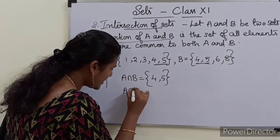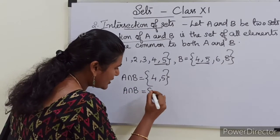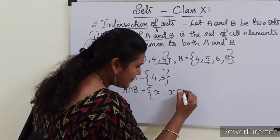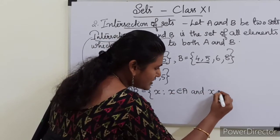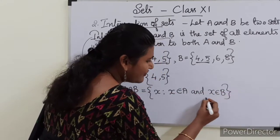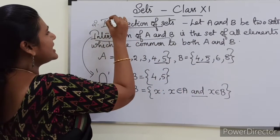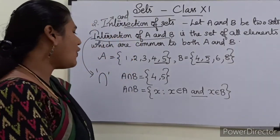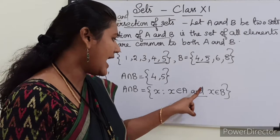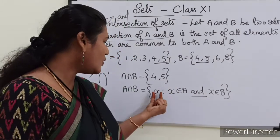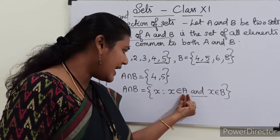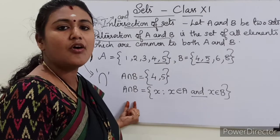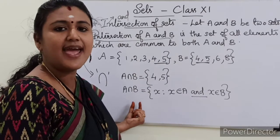So A intersection B is equal to the set of all X such that X belongs to A and X belongs to B. So this word 'and' is very important — the word 'and' is usually associated with intersection. Its meaning is that those common elements of A and B will be the elements of intersection, that is A intersection B.